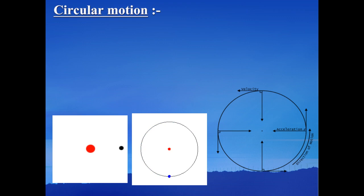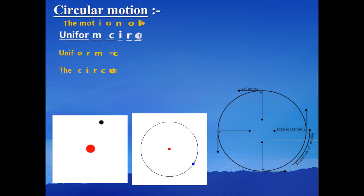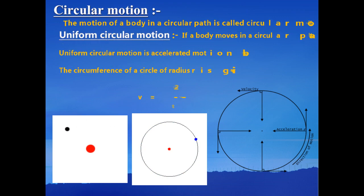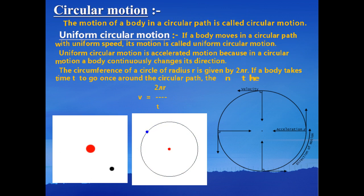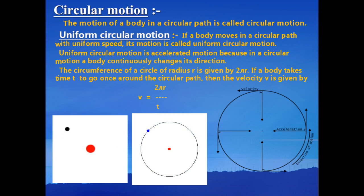So what is circular motion? The motion of an object or a body in a circular path is known as circular motion. Here you can see the motion of Earth around the Sun, or the motion of the Moon around Earth, are examples of circular motion.